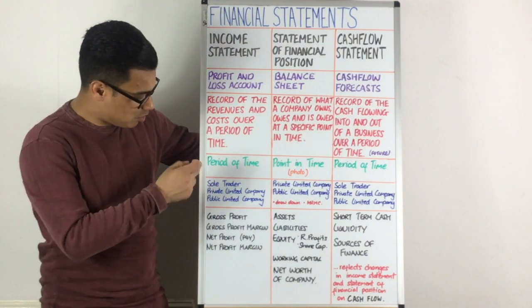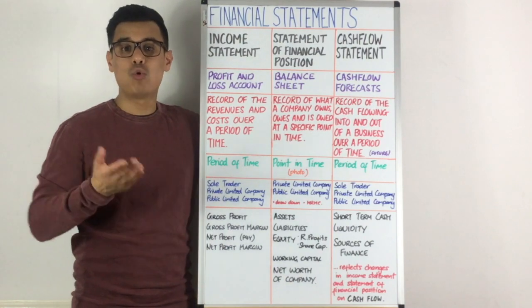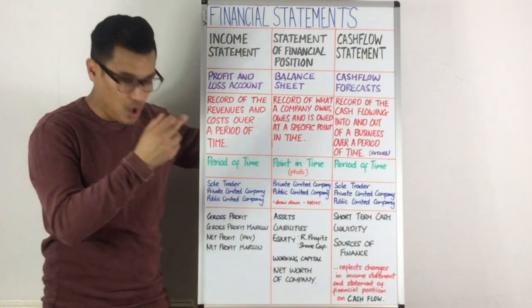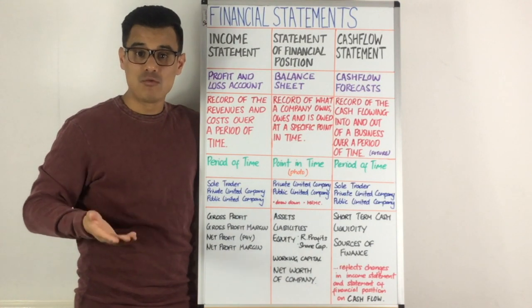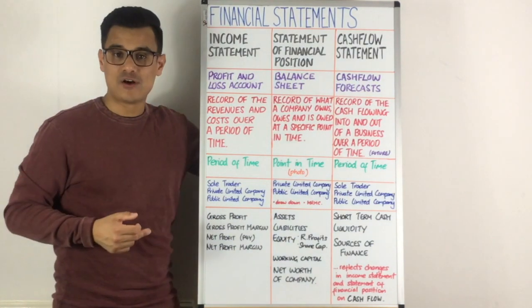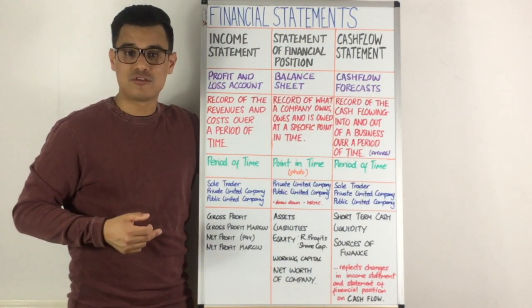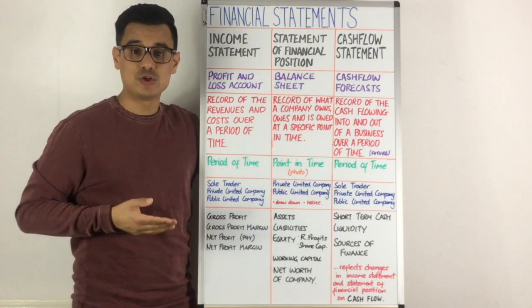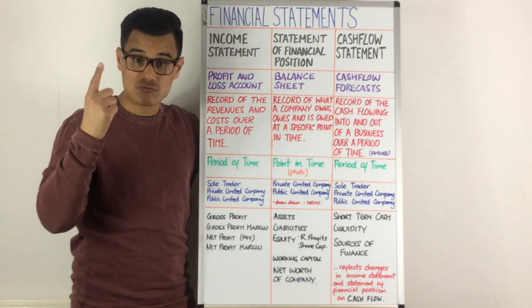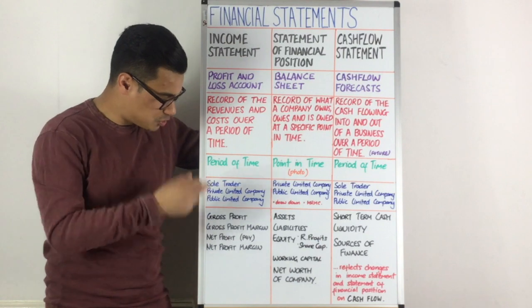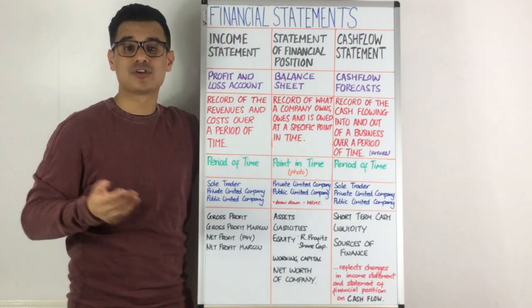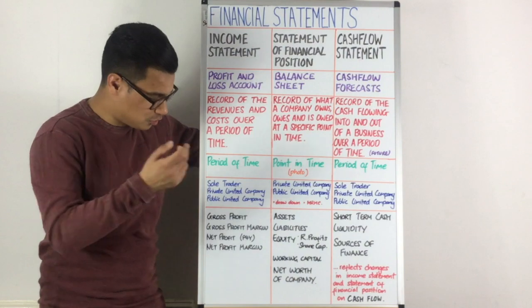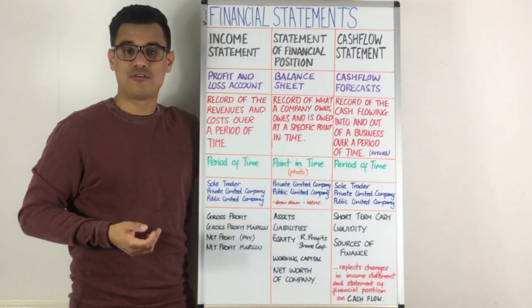Sole traders, private limited companies, and public limited companies will all definitely use an income statement. From it you can find out your gross profit, and because you can find out your gross profit you'll be able to find out your gross profit margin — that ratio is so likely to be questioned. Also your net profit, sometimes referred to as your profit for the year, and like with gross profit you can find your net profit margin.